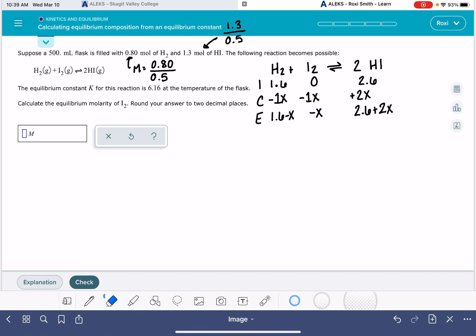So our goal is to calculate the equilibrium molarity of I2. That means we need to know what this number is right here. We have to solve for X. In order to solve for X, we need to set up an equilibrium expression. That's going to be our products, HI, over our reactants, H2 and I2, each one raised to their stoichiometric coefficient.